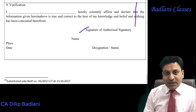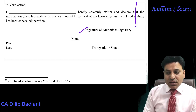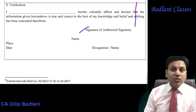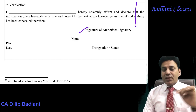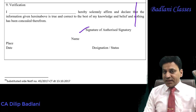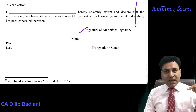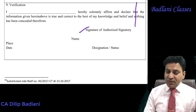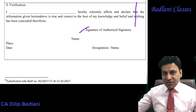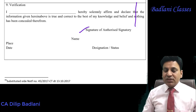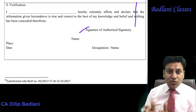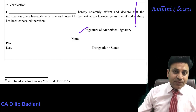Place and date - बस इतना साथ आपका CMP-02 complete हो जाता है। Next session में हम लोग CMP-03 की बात करेंगे। CMP-03 basically stock intimation के बारे में होता है उन लोगों के लिए जो migration में आते हैं। जो old law से new law में आए हैं उनको CMP-01 और CMP-03 दोनों fill up करना पड़ता है - CMP-01 composition scheme में आने के लिए, CMP-03 अपने stock का declaration देने के लिए। CMP-02 हम लोगों ने देख लिया - thank you, thanks a lot।